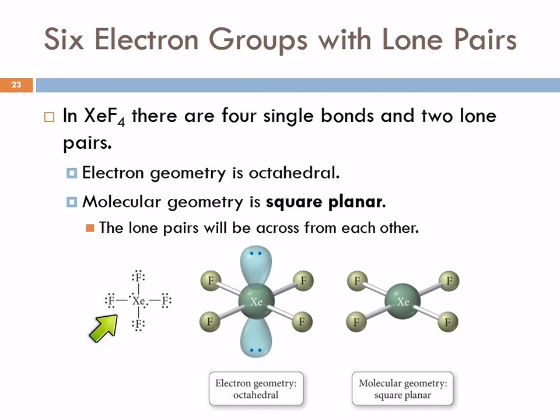Xenon tetrafluoride. Now we have four single bonds and two lone pairs. Still the six groups, electron geometry is octahedral. Now we have two lone pairs. So the first lone pair goes in here. The second lone pair is going to be on the other side because they take up more space. And so if they're across from each other, they have more space than if they're next to each other. So those will be opposite from each other, and this is called square planar because it forms a square and it's flat. All the atoms lie in the same plane.